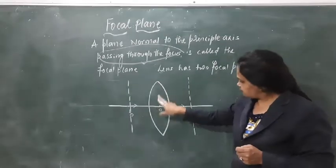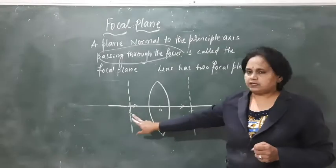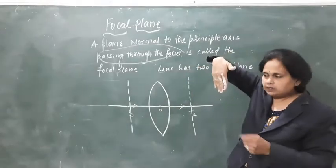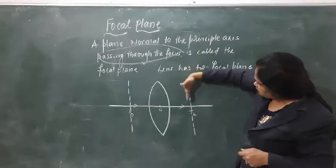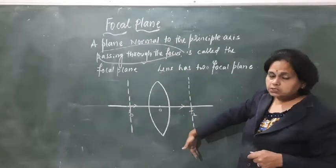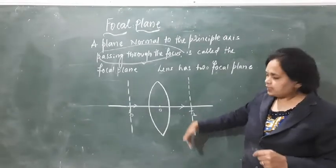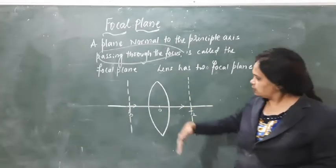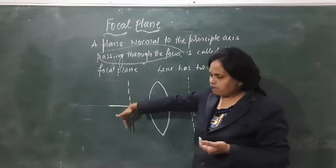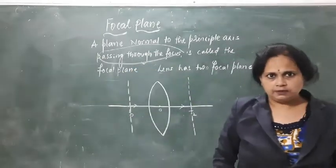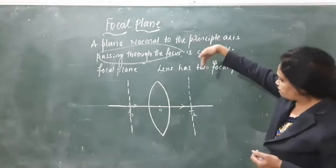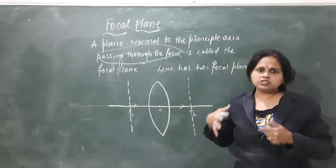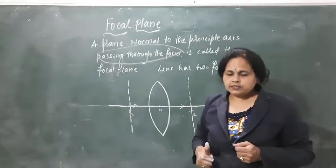Now assume carefully — if this is a convex lens, here it is F2 and here it is F1. The plane which is passing — you can see my hand — this is a plane. The plane which is passing perpendicular through F2 is called the focal plane. If the plane is passing through F2, then it is called the second focal plane. This focal plane always passes perpendicular to the focal point. Please imagine it is a three-dimensional concept we are talking about.